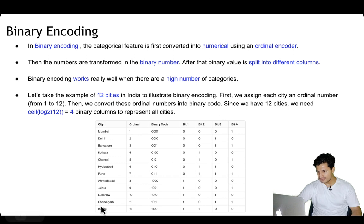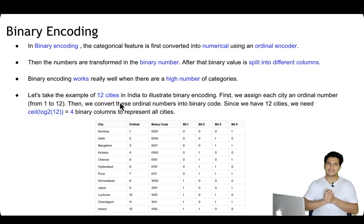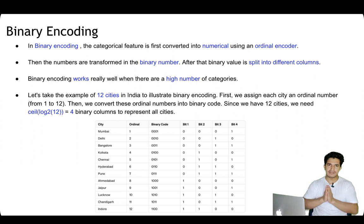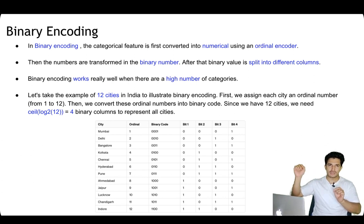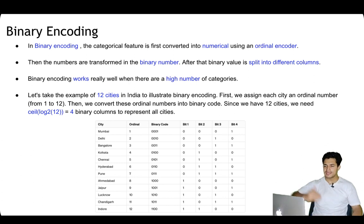So for 12 cities, one-hot encoding would need 12 columns, dummy encoding would need 11, but binary encoding needs just 4 columns. The idea is to convert categories to numbers and then represent them in binary. This technique works especially well with high cardinality. For example, with 1000 categories, one-hot encoding needs 1000 variables, dummy encoding needs 999, but binary encoding needs just 10 variables because 2 to the power 10 is 1024. That's a reduction from 1000 to just 10.